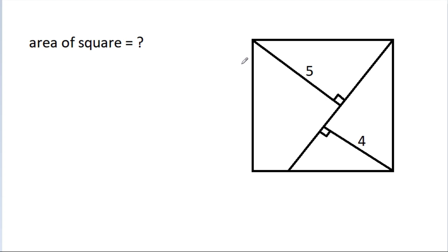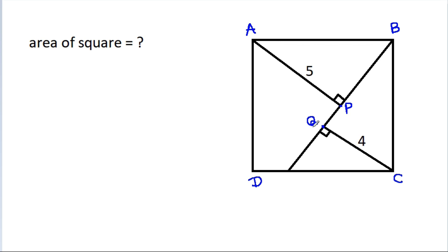In this video, we have been given a square. Suppose A, B, C, D. And suppose this point is P and this point is Q. Then AP is 5 and CQ is 4. Then we have to find the area of the square ABCD.